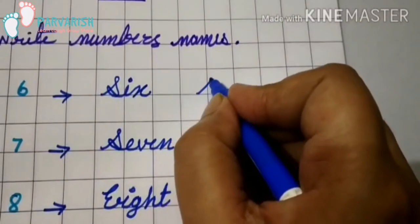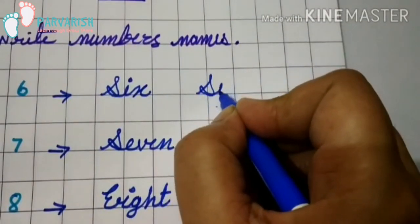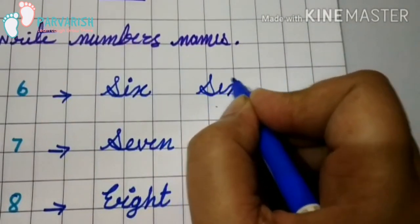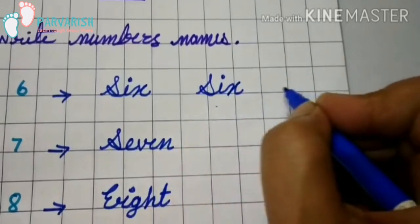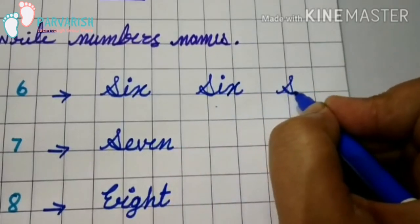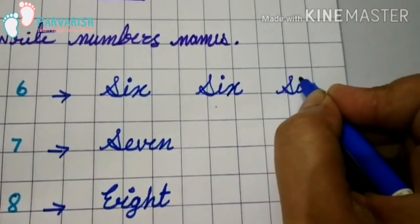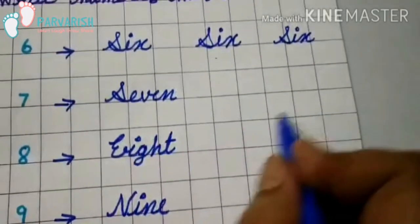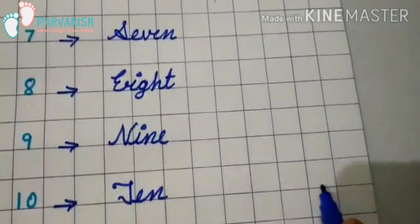You have to write this 3 times, like 1 to 5 you have written number names. Write this way 3 times for 6 to 10.